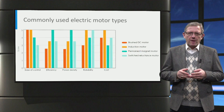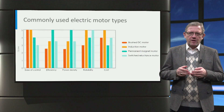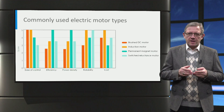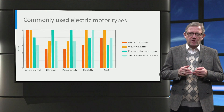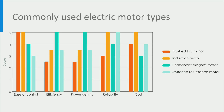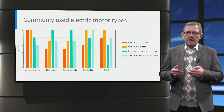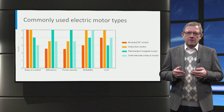Four types of electric machines have been used in both plug-in hybrid electric vehicles and battery electric vehicles to date, namely brushed DC motor, induction motor, permanent magnet motor and switched reluctance motor. It can generally be concluded that induction motors are the most popular when considering various parameters such as control, efficiency, power density, reliability and cost.